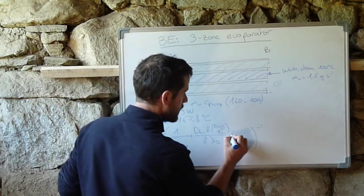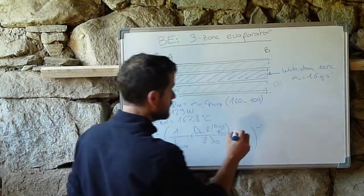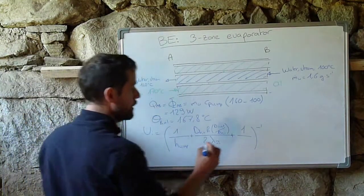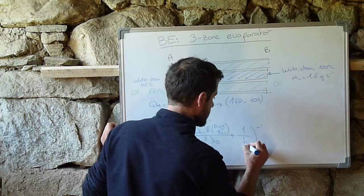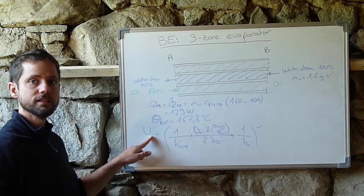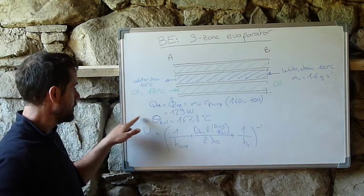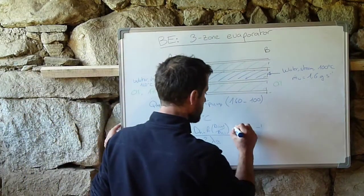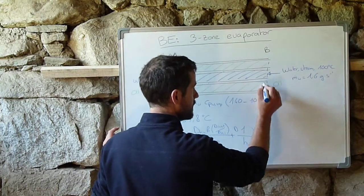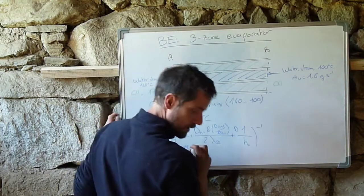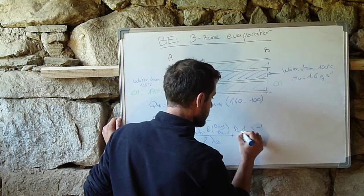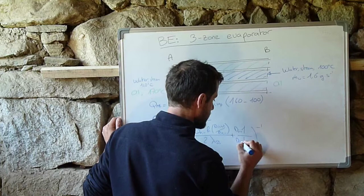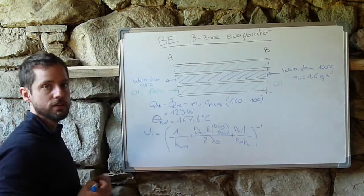And then you need to add the thermal resistance of the outer part, so the conduction in the oil part. And because this is expressed on the inner surface, then you need to correct this last term because this conduction is applying on the outer section of this tube. So you multiply it by the ratio of the inner by outer diameter of the inner tube.